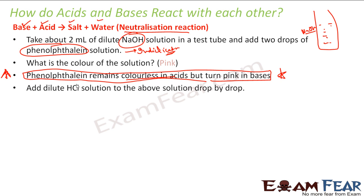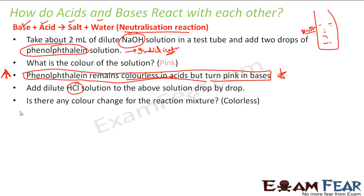What we will do next is add dilute HCl drop by drop. We will keep adding it drop by drop, and we will observe that the reaction is happening and the solution is becoming colorless.